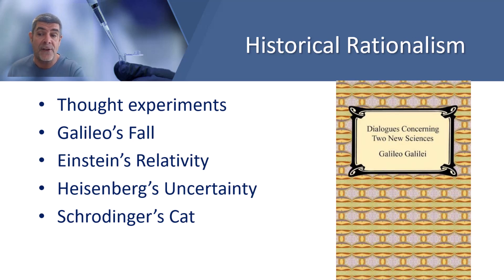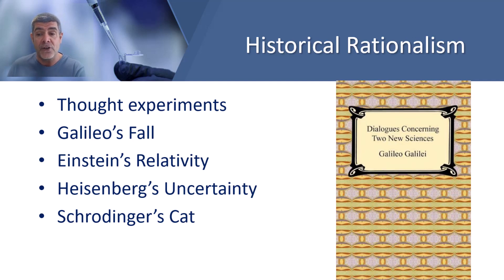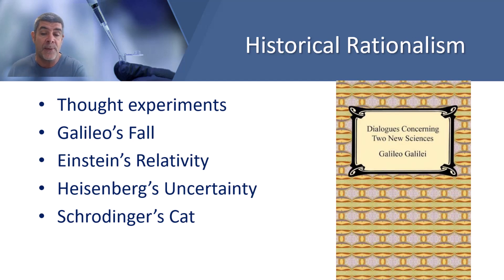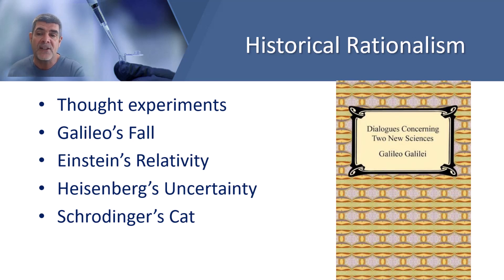Galileo's use of thought experiments showed that besides experimental science, he also valued logical reasoning. Einstein developed the theory of special relativity from a thought experiment about running alongside a photon of light, while general relativity was developed from imagining a man in a falling lift. Heisenberg's quantum mechanics, Schrödinger's wave equation, and his famous cat thought experiment are all examples of rationalistic thinking producing significant advances in science. In each case, the scientists used rigorous mathematics rather than experiments. Rationalism and a priori are the basis for deduction, which we'll contrast with induction in the next video.